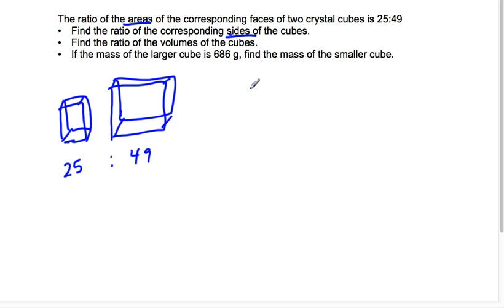So first we have areas. So areas we know the ratio is A squared to B squared. So then if I want to find the ratio of A to B, I have to take the square root of both these values. So I'm taking the square root of 25 and the square root of 49, and that tells me that the ratio is 5 to 7. So the ratio of the corresponding sides is 5 to 7.